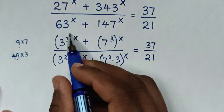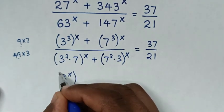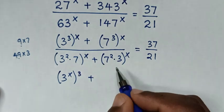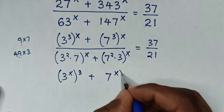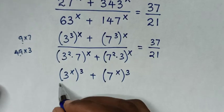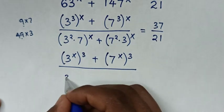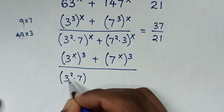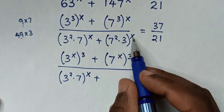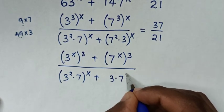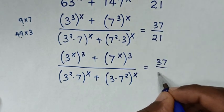Then in the next step, we take the power of x inside and the power of 3 outside the bracket, so it will be (3^x)^3, then plus, similarly (7^x)^3, then over, from the denominator, we have 3 squared times 7, bracket power of x, then plus 3 times 7 squared, bracket power of x, is equal to 37 over 21.